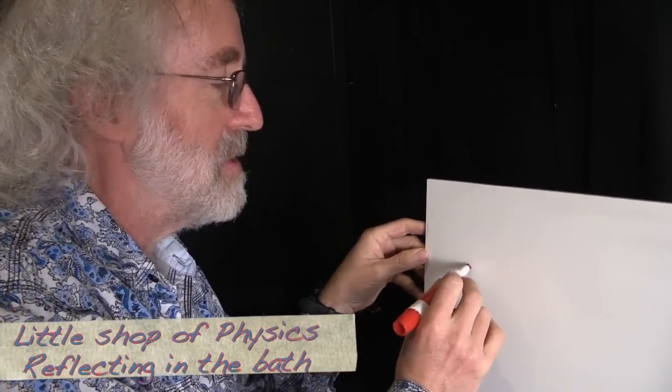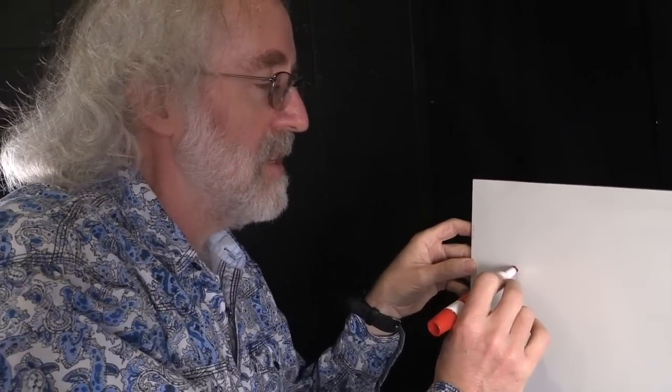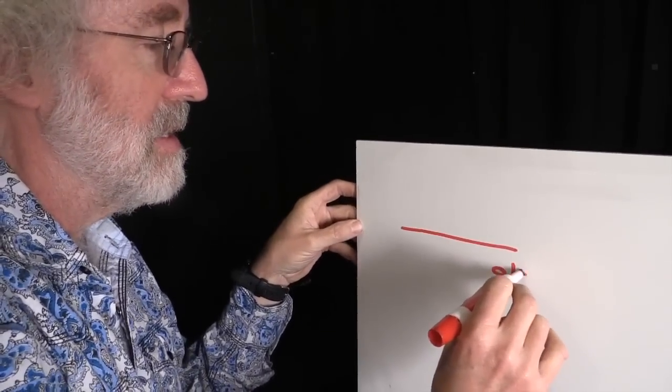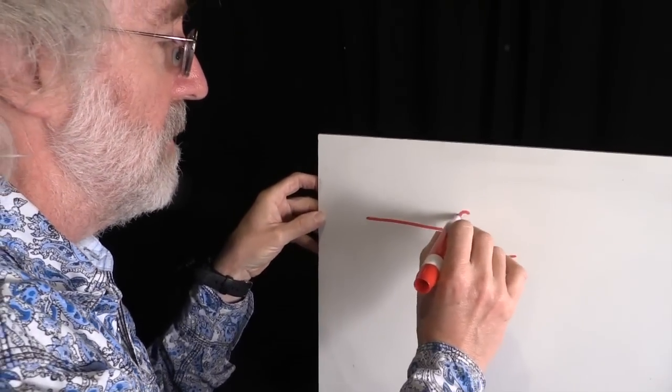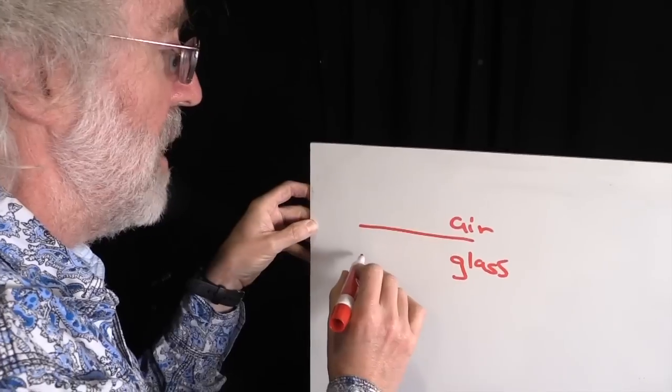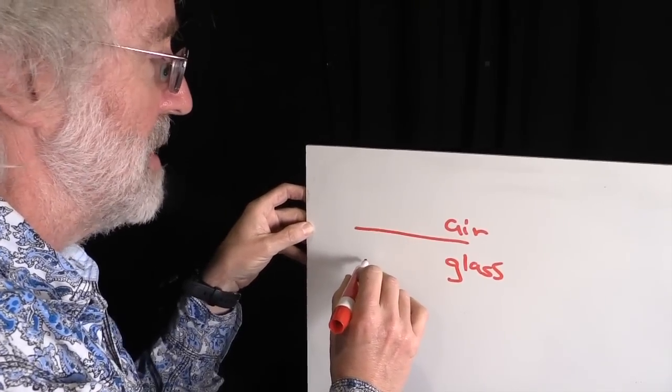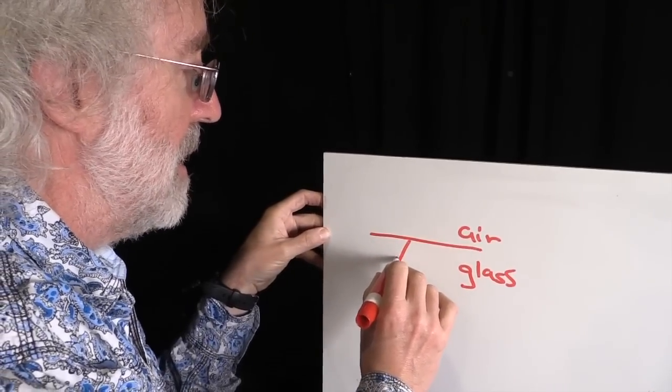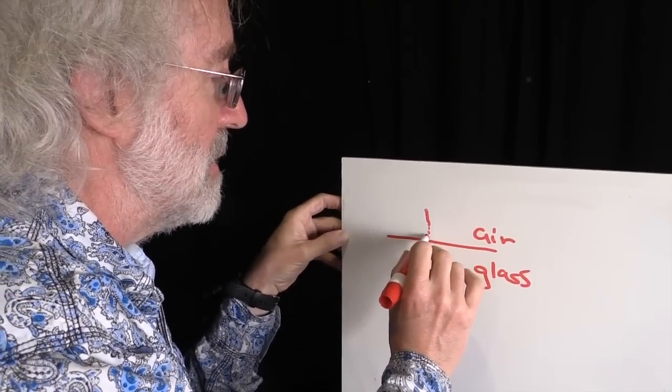We're going to talk about something called total internal reflection. So suppose I've got this situation. I have a boundary between glass and air. So I have a ray of light inside this glass. You can imagine it's like a window pane or something like that. And when it comes out and hits the boundary with the air, it bends.